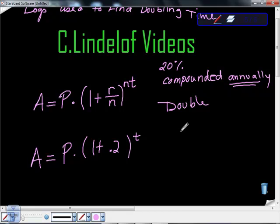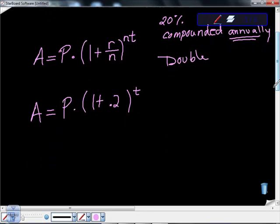Our question here is: how much time will it take? You can see we still have three variables, which is a really bad sign. We need just one variable. Otherwise we get back what's called a literal equation, which is not a number — and we want a number back.